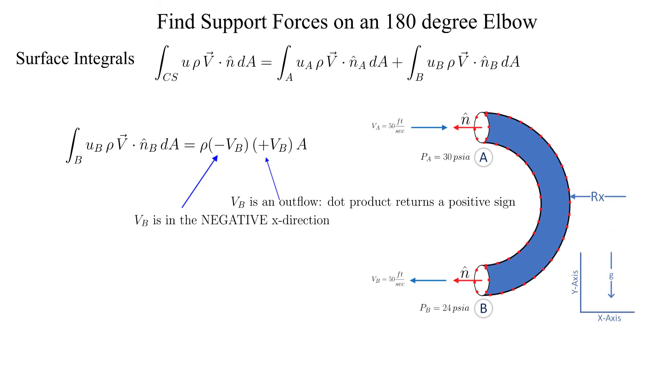The total surface integral is equal to two times the density times VA squared times the area. Note that we are using the fact that VA equals VB.